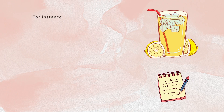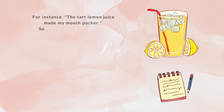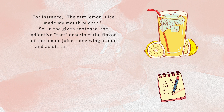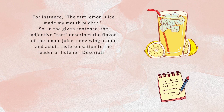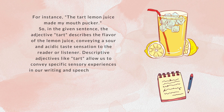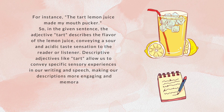For instance, consider the sentence: 'The tart lemon juice made my mouth pucker.' In this sentence, the adjective 'tart' describes the flavor of the lemon juice, conveying a sour and acidic taste sensation to the reader or listener. Descriptive adjectives like 'tart' allow us to convey specific sensory experiences in our writing and speech, making our descriptions more engaging and memorable.